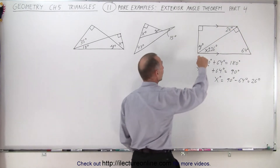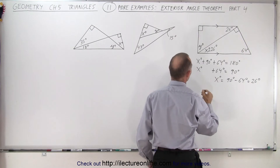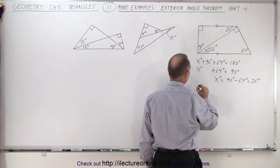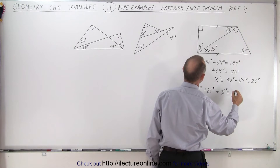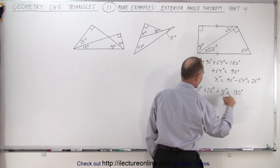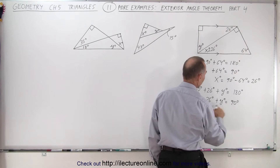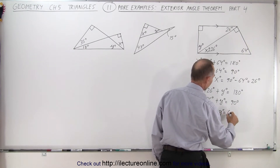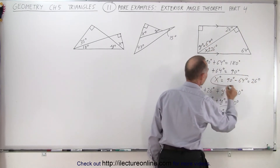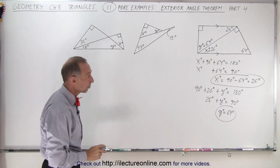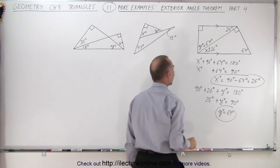Now we can see that we have another triangle. We have three angles: this one is 90 degrees and this one is 26 degrees. The sum of those three must add up to 180 degrees. So 90 degrees plus 26 degrees plus y degrees equals 180 degrees. Subtracting 90, then subtracting 26, we get y degrees equals 64 degrees. As a quick check, 26 degrees plus 64 degrees does indeed add up to 90 degrees, confirming the right angle.